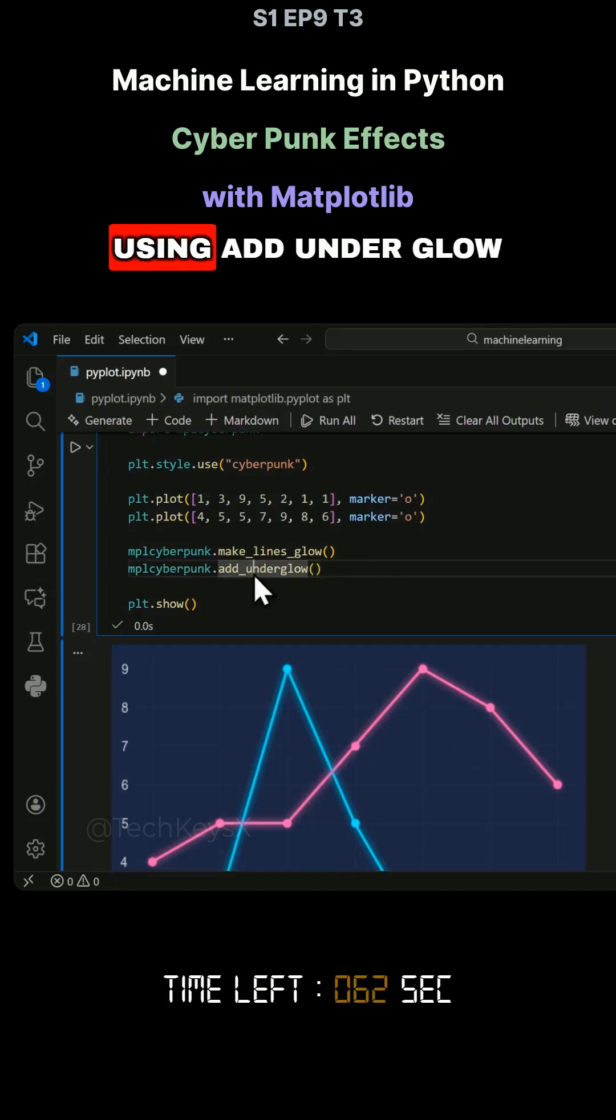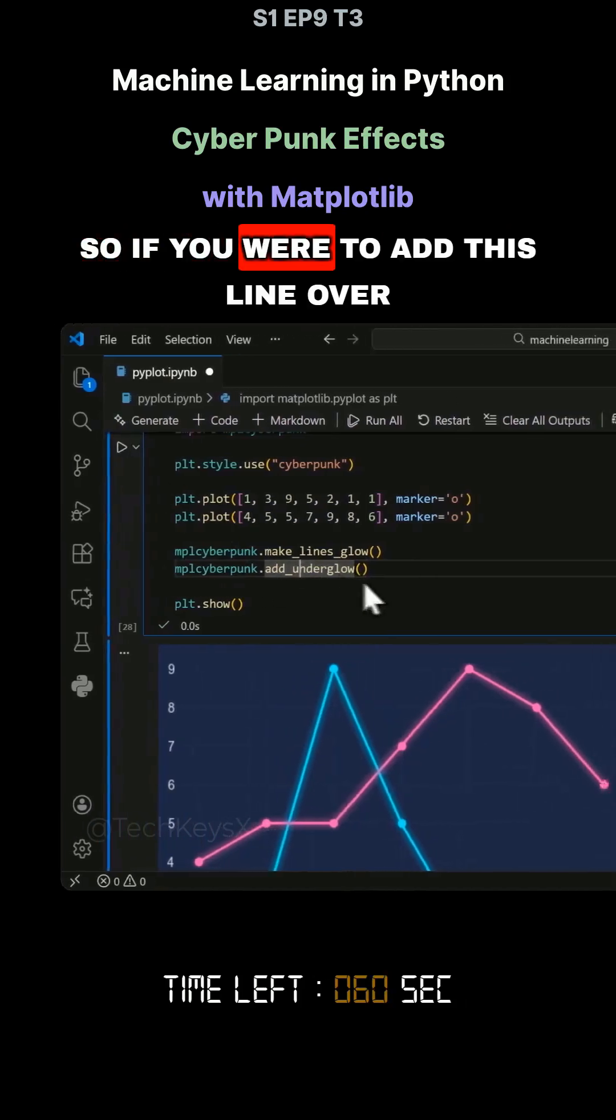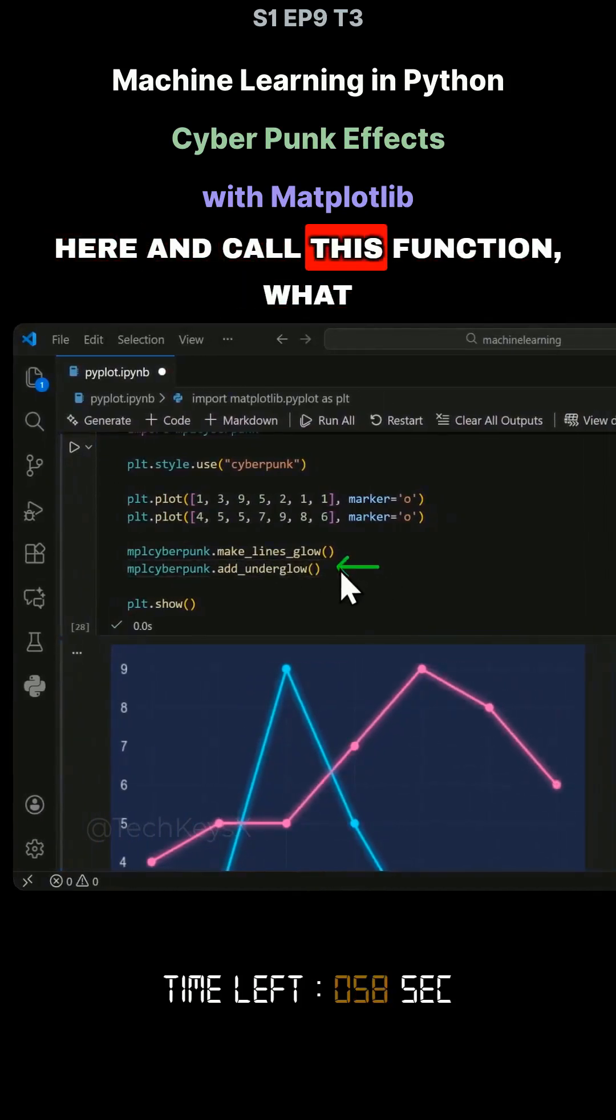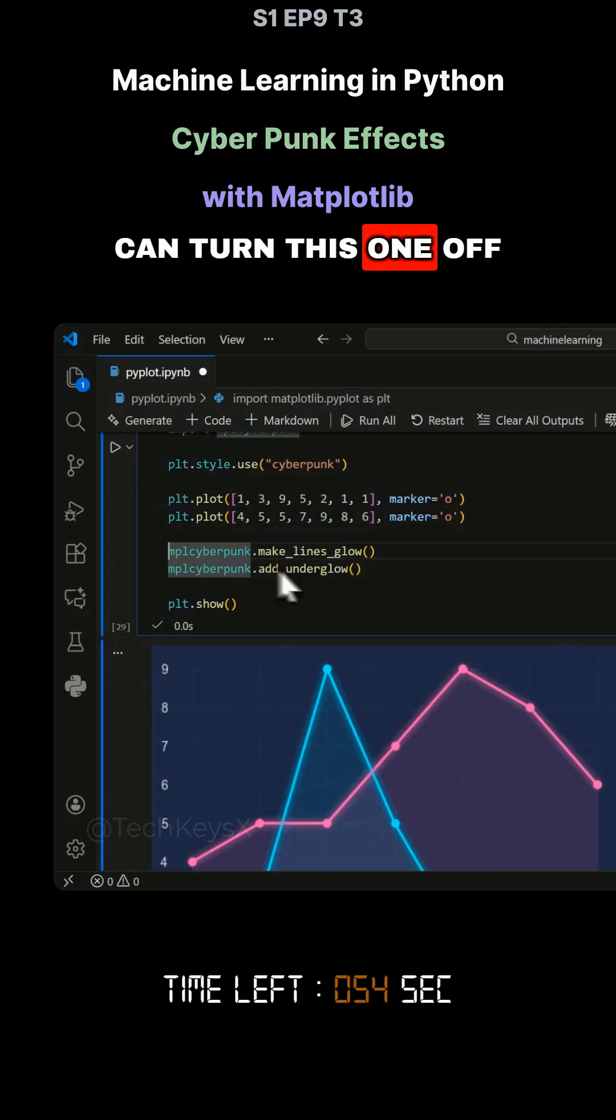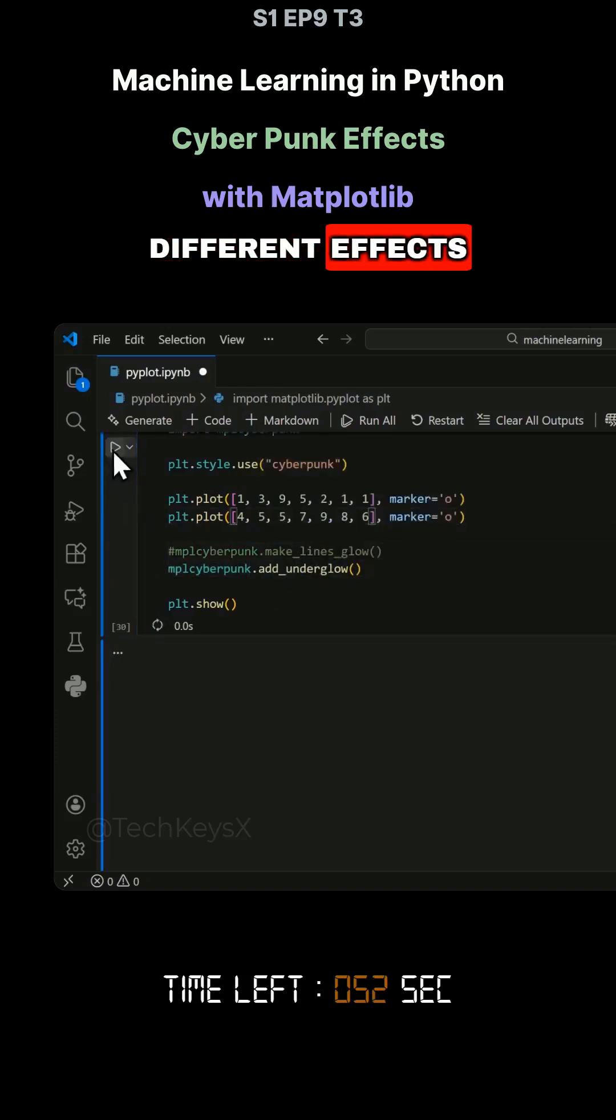But you can add it separately by using add under glow. So if you were to add this line over here and call this function, what this will do is add under glow, or you can turn this one off to get a combination of different effects.